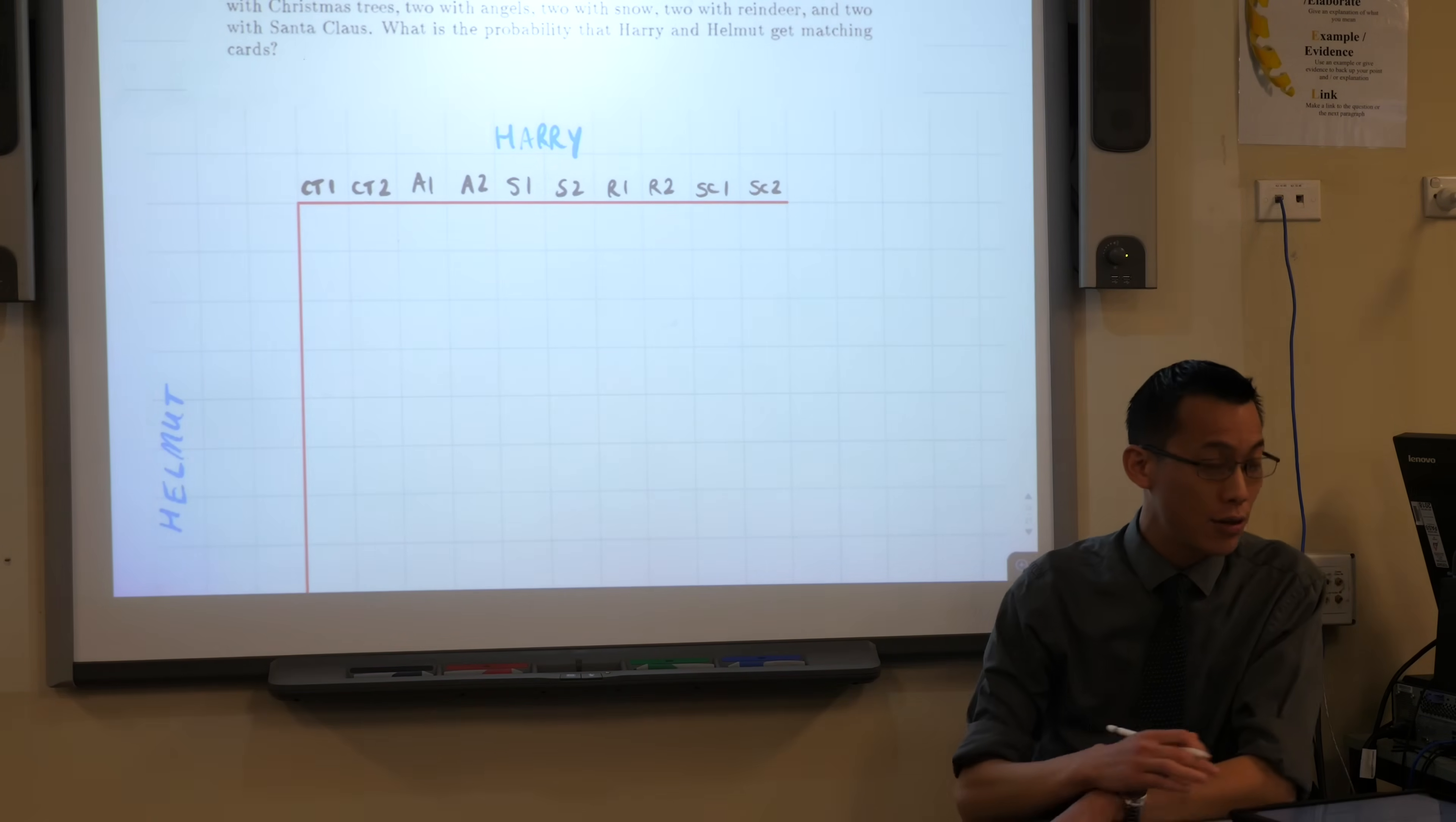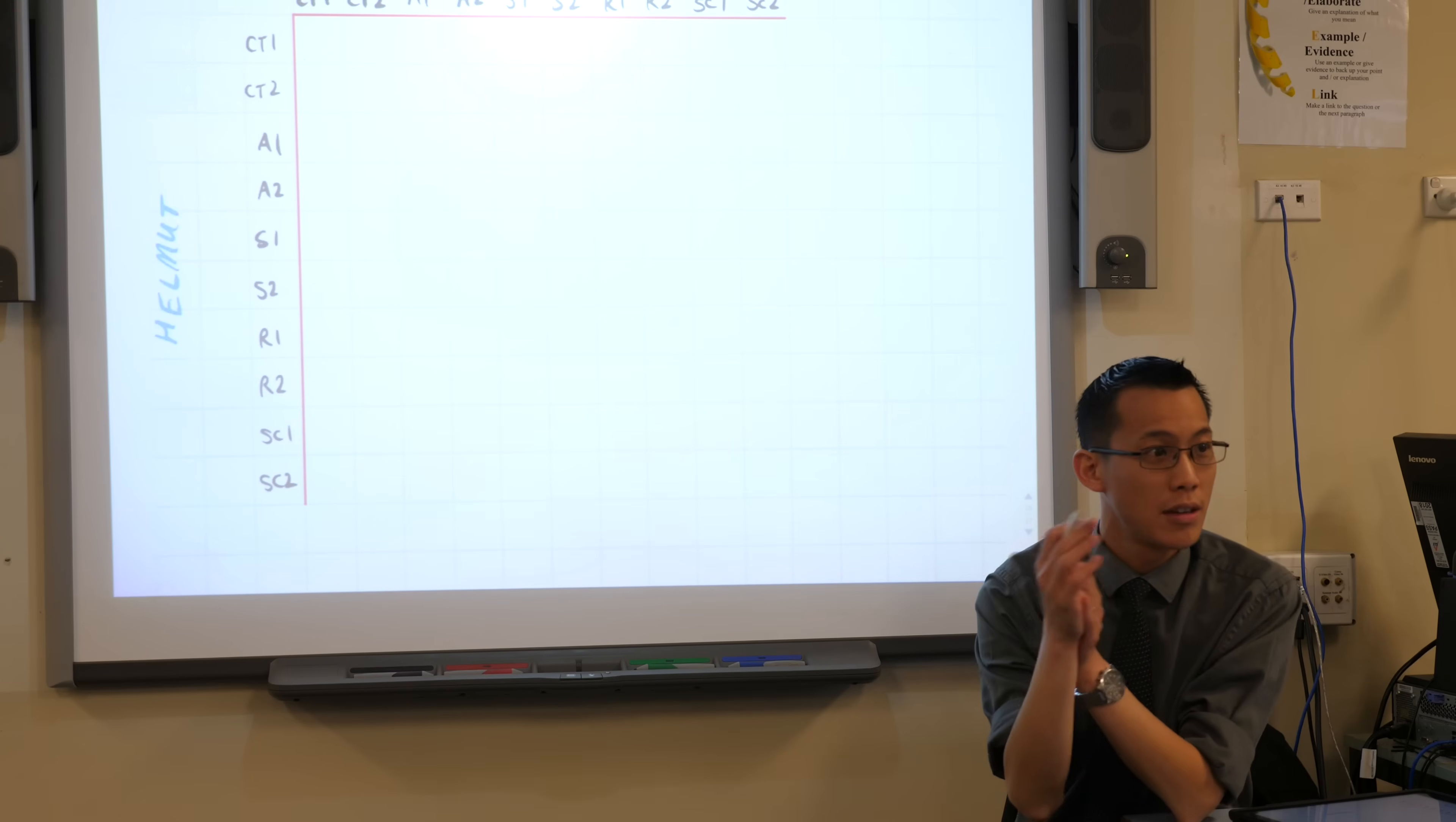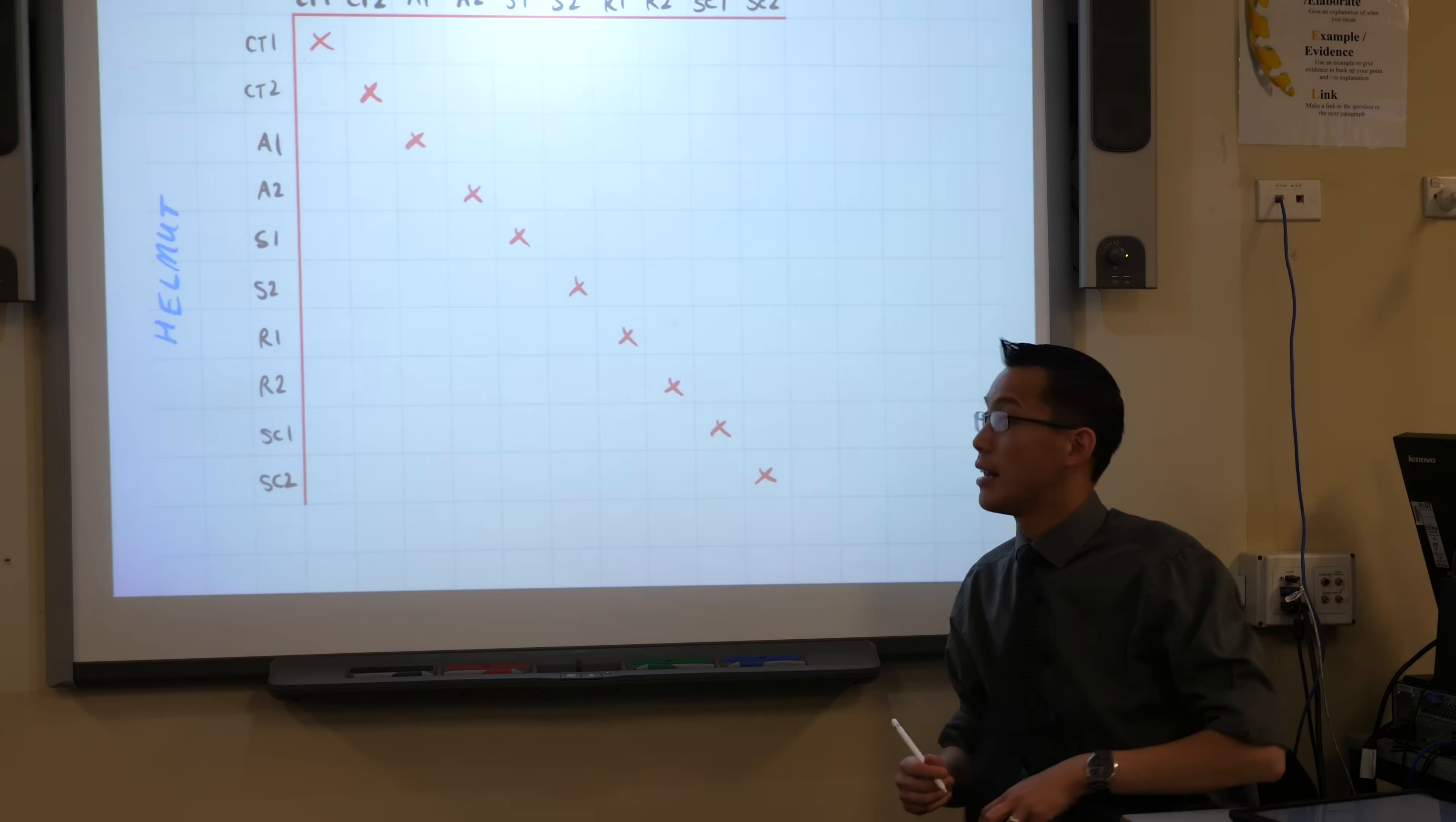So these are the ten possible cards Harry could get. And naturally, Helmut has the same sample space to choose from. So I'm going to put all of these options down the side for Helmut. But, and this is one of the wonderful things about a dot diagram, the dot diagram itself helps you work out what the sample space will be for the multistage event. Can you tell me which of those squares I can't place a dot in? Very good, the diagonal is kind of a dud, isn't it? They both can't get the first Christmas tree card. They can both get Christmas tree cards, but not the same one. So I have a whole bunch of options that have been knocked out.